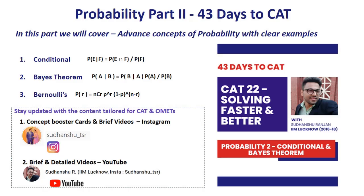Hi friends, I hope you're all doing great, prepping up really well for the upcoming CAT. I'm sure many of you are a little anxious, but remember it's a good sign — if it's important, you will be a little anxious. On that note, let's begin the session for today. In the last part, Probability Part 1, we covered the basics. Continuing into advanced key concepts, in this part we'll cover conditional probability, Bayes' theorem including total probability, and Bernoulli's trials.